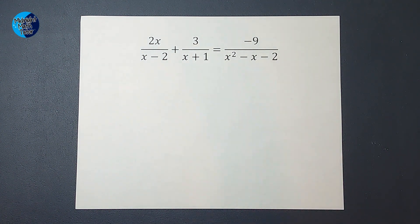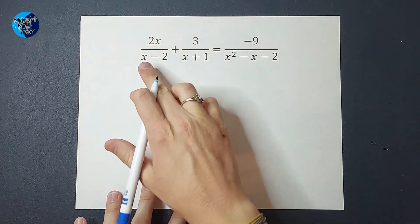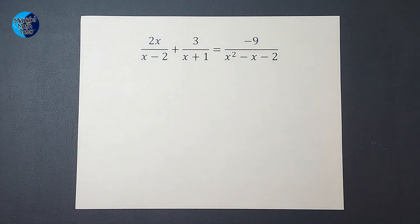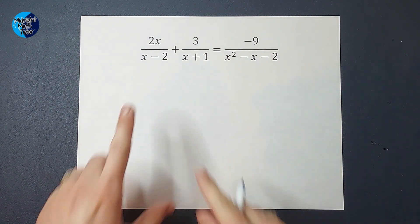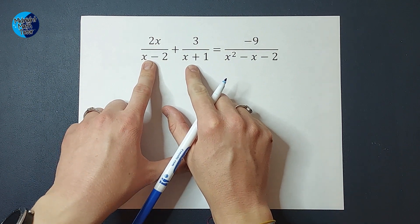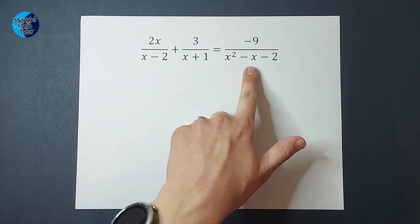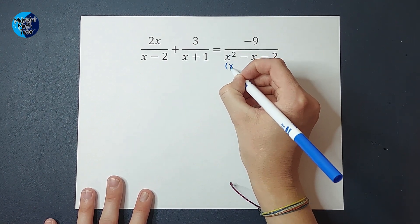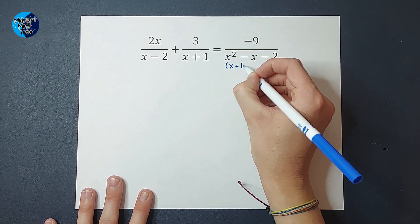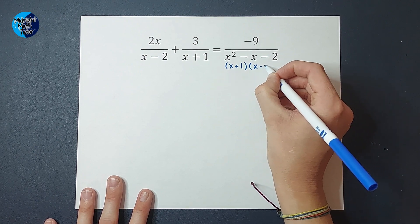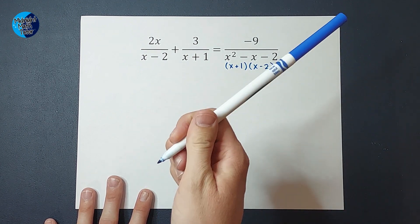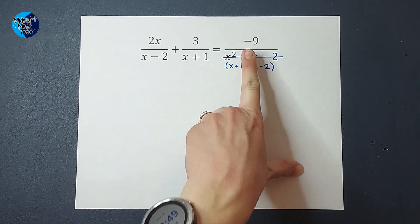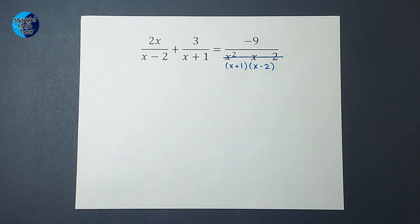So we're doing something very similar here in that we're actually going to get rid of these fractions. But what we need to know is what do we multiply by to get rid of those fractions because this isn't as simple as just a 5. So my first step is I'm going to factor anything I can. So these guys are already factored, but this guy I can factor. And when I factor this, I'm going to get x plus 1 times x minus 2. If you need a factoring review, I'll link a video in the corner.